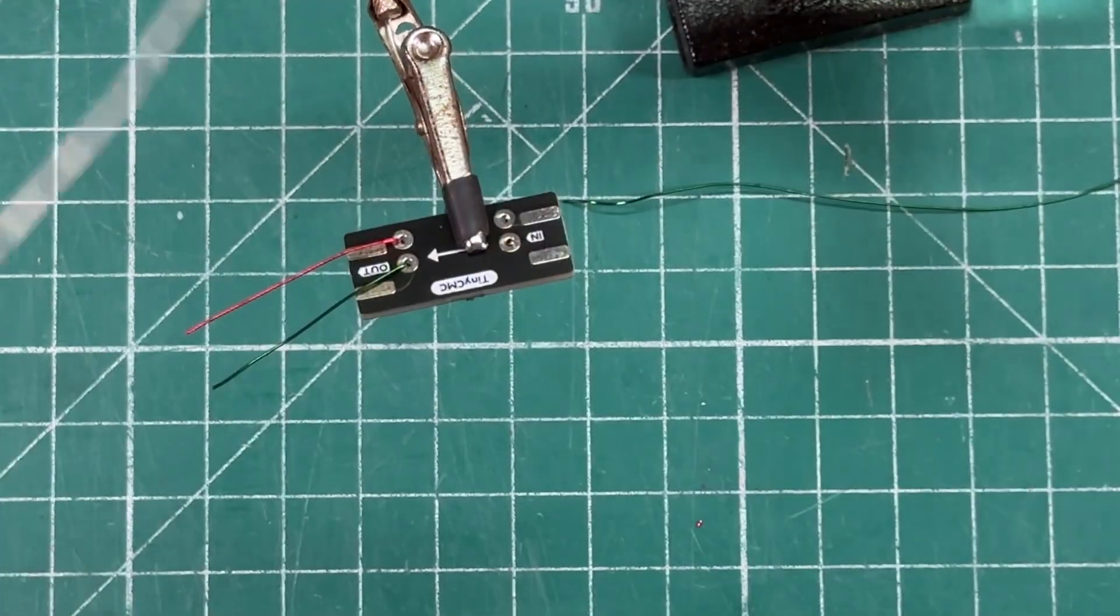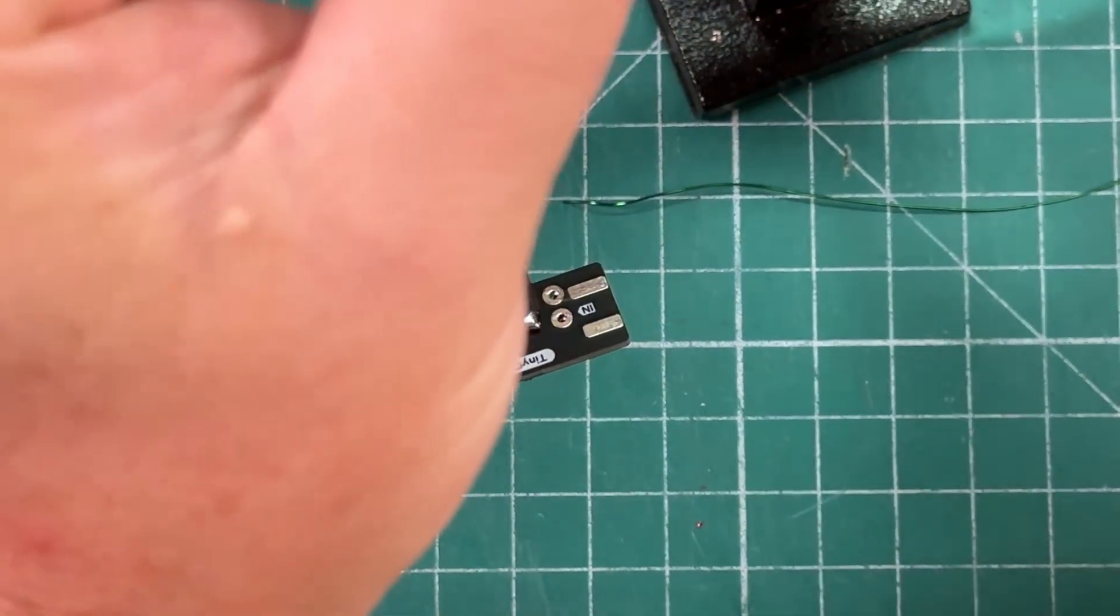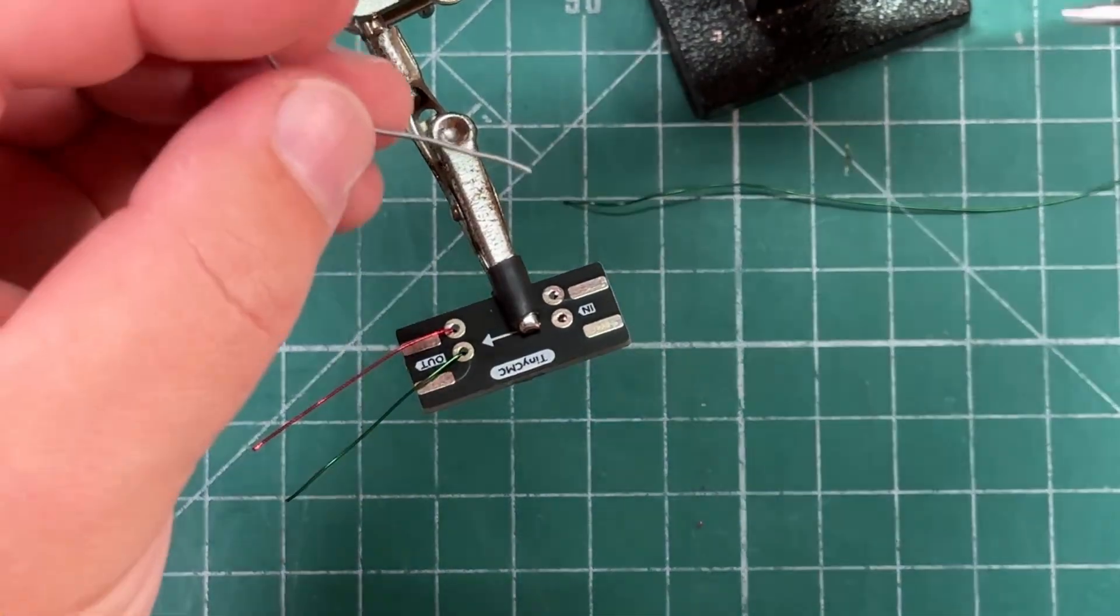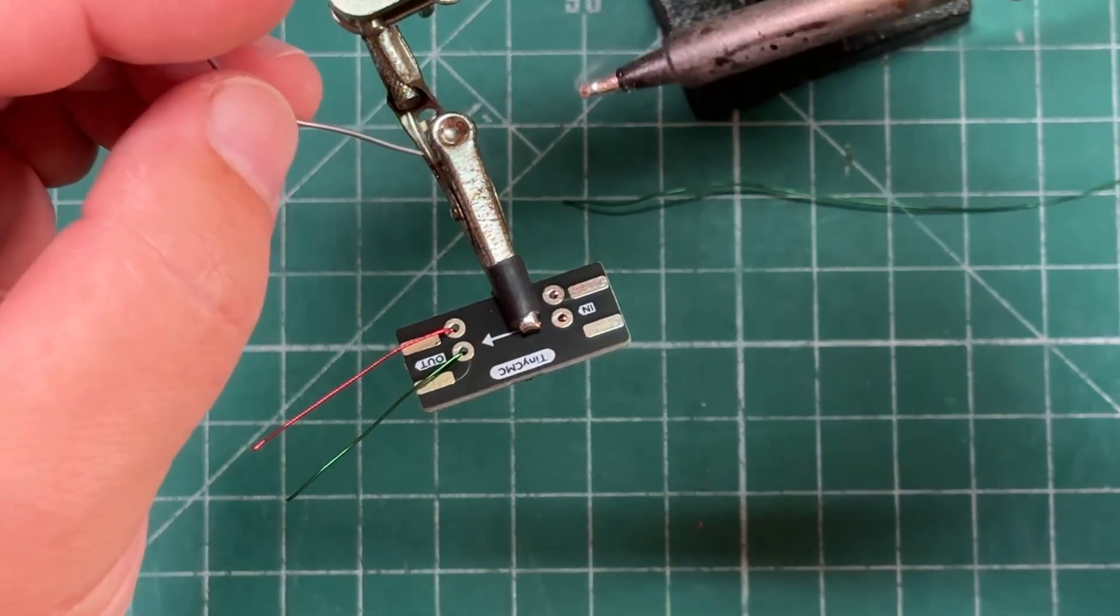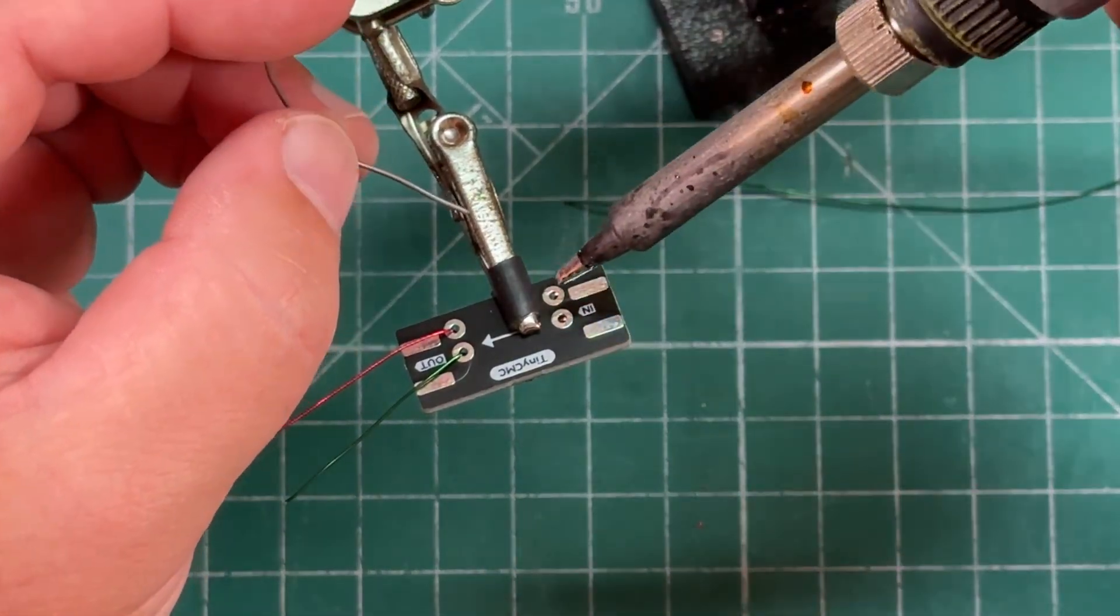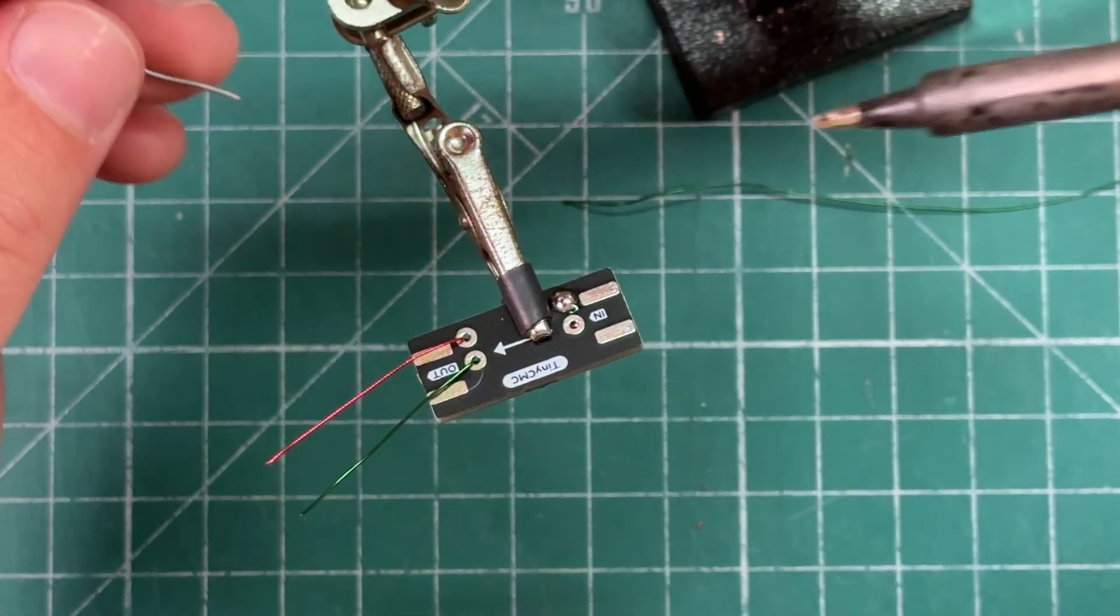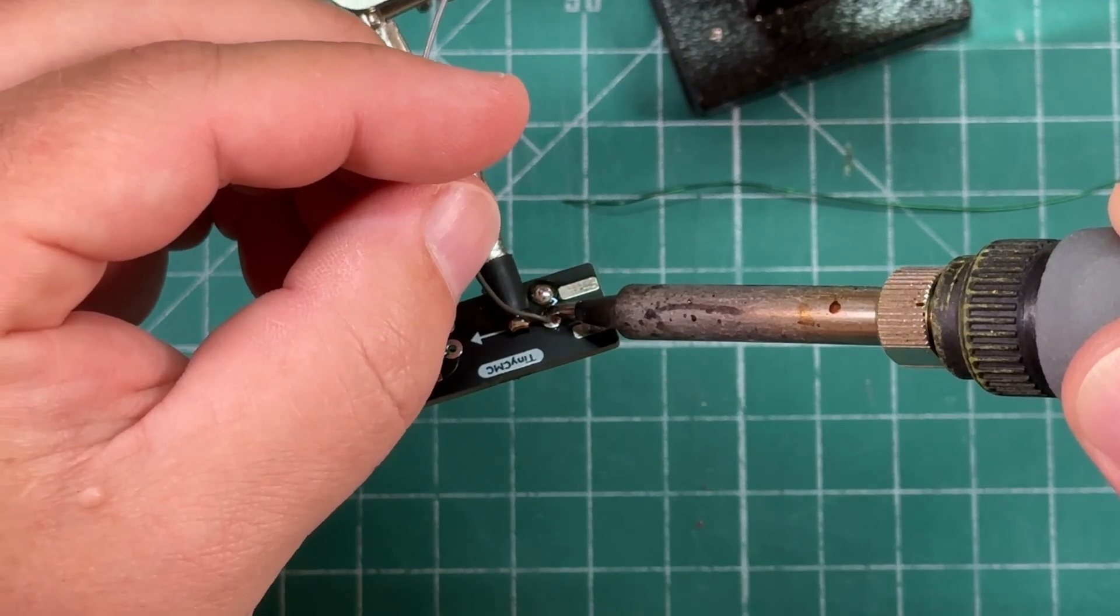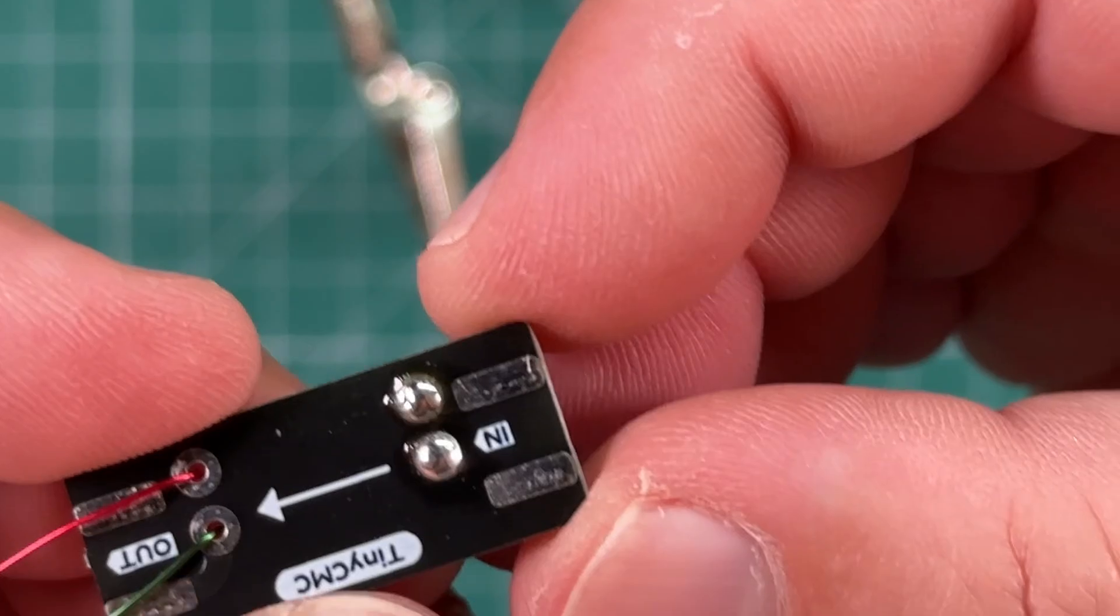Theoretically, the heat should melt the enamel from the magnet wire per the instructions. So we'll just go ahead and solder like we mean it. That'll work.